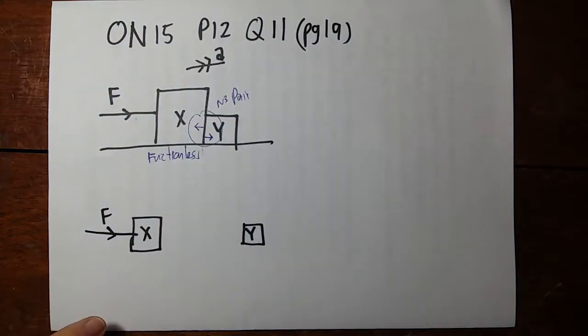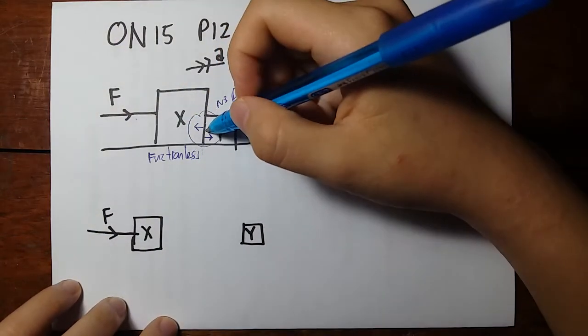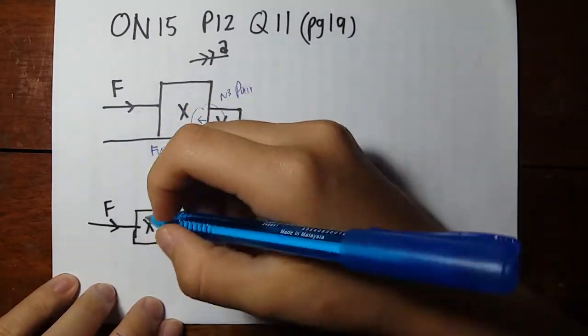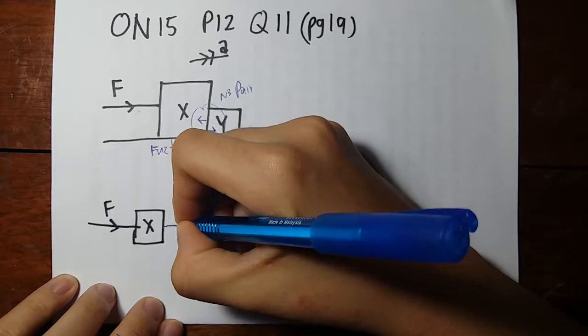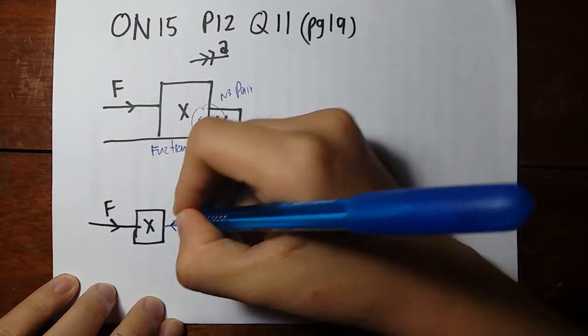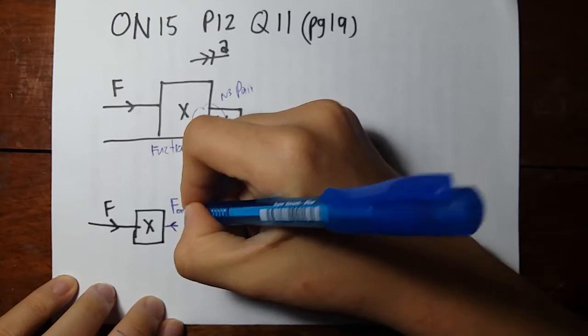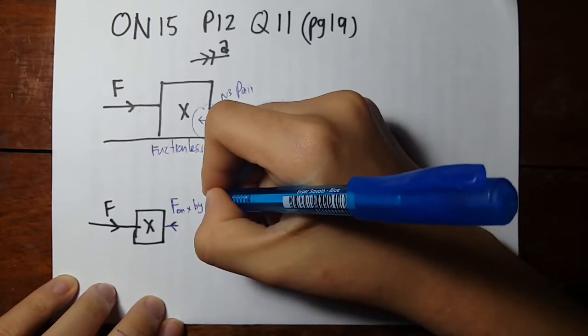Now how can we add to our diagram? What's pushing back on block X? It's the contact force from block Y. So this is a normal reaction force, or you can say the force on X by block Y.